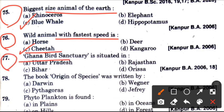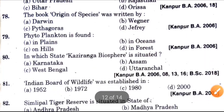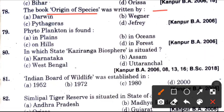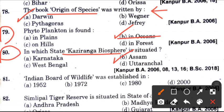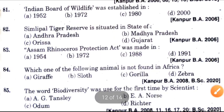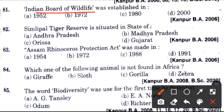Next question: Ghana bird sanctuary is situated in? Answer is B, that is Rajasthan. Seventy-eighth question: The book Origin of Species was written by? Answer is A, that is Darwin. Next question: Phytoplankton is found? Answer is B, which is in oceans. Eighty-fourth question: In which state is Kaziranga biosphere situated? Answer is B, that is Assam. Eighty-first question: Indian bird of wildlife was established in? Answer is A, that is 1952. Next question: Simlipal tiger reserve is situated in state of? Answer is C, which is Orissa.